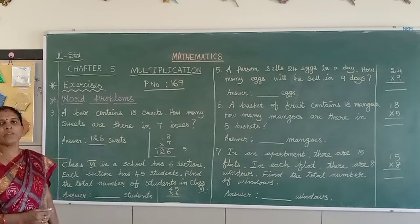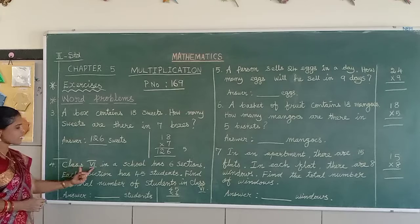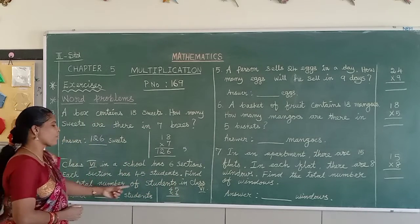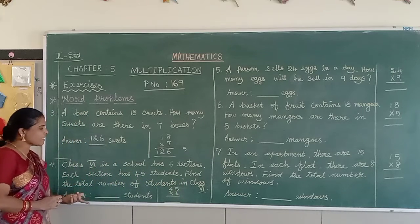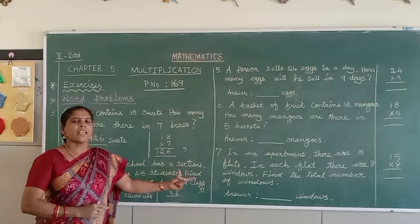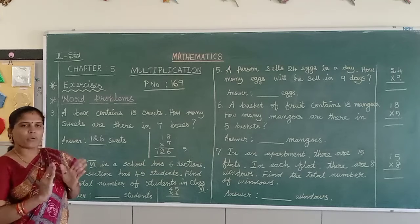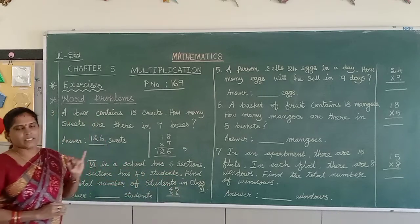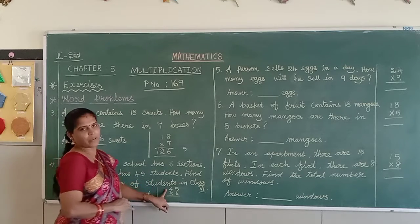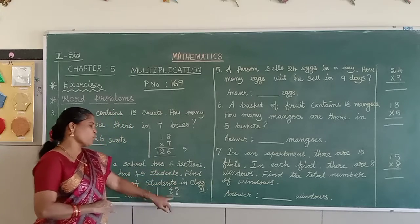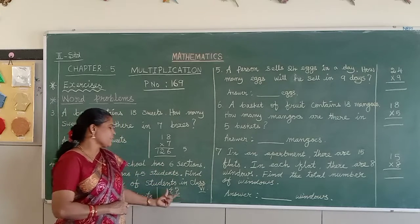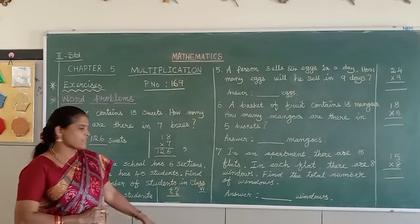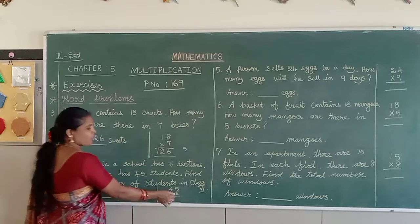There are 126 sweets in the 7 boxes. Just read the story well, understand it, and do the multiplication to find the answer. Now come to the next sum. In class 6 in a school there are 6 sections. Each section has 45 students. Find the total number of students in class 6. We should multiply the sections by the students. Write 45 as factor 1 and 6 as factor 2.